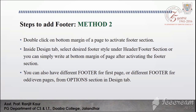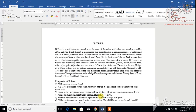Now let's see the second method. It is again a very simple method to add a footer. For this, you just need to double-click on the bottom margin of a page to activate the footer section. Then, inside the Design tab, select the desired footer style under the Header & Footer section. Or you can simply write at the bottom margin of the page after activating the footer section. You can also have a different footer for the first page, or a different footer for odd or even pages, from the Options section in the Design tab.